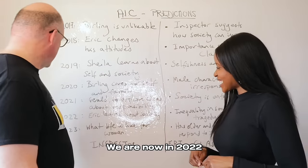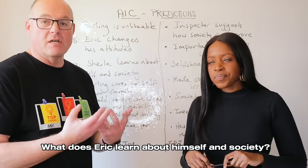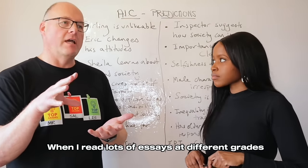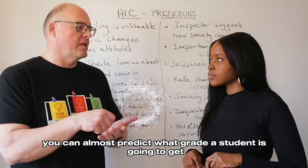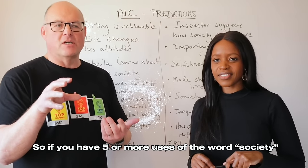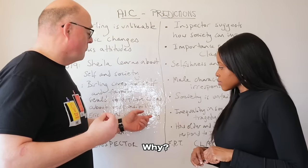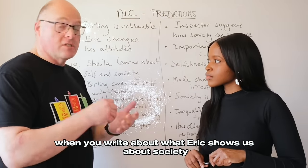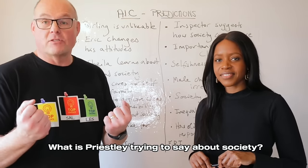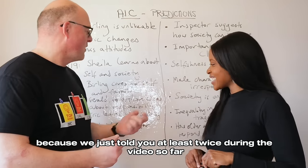In 2022 the character question was: what does Eric learn about himself and society? Fantastic, because it has that word 'society' in it. You can almost predict a student's grade by how often they use the word 'society' — five or more uses of the word society and you're likely to get a grade seven or higher. When you write about what Eric shows us about society, you're writing about Priestley's ideas — what is Priestley trying to say about society?